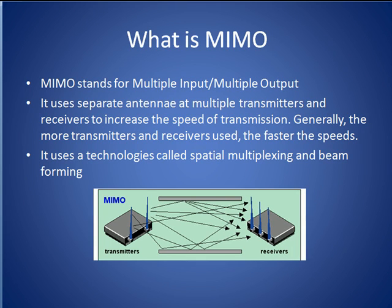MIMO stands for multiple input, multiple output. As shown here, MIMO uses multiple antennae at several transmitters and receivers to achieve increases in bandwidth. Generally speaking, the more transmitters and receivers that are used, the faster the speed that is delivered. The number of antennae at the receivers in a MIMO system is always greater than or equal to the number of transmitters.